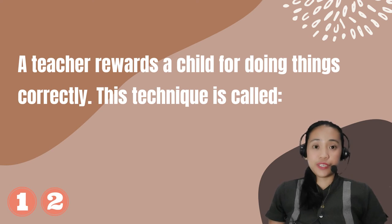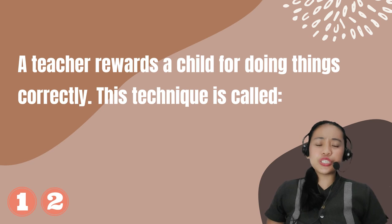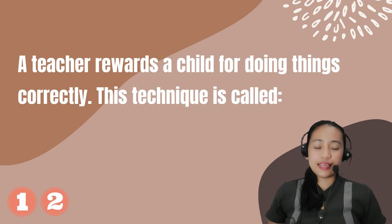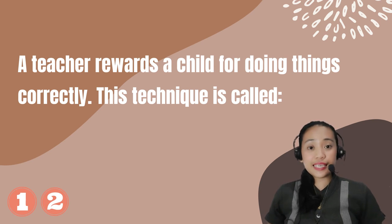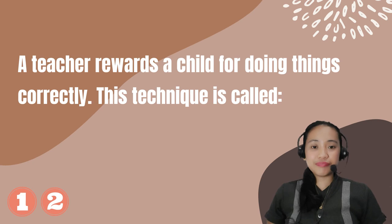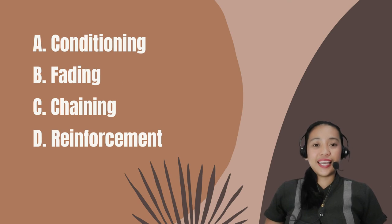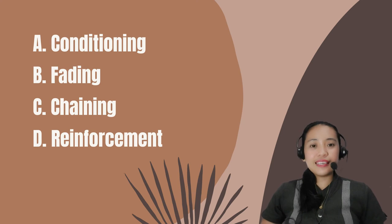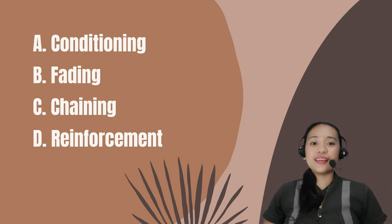Number 12. A teacher rewards a child for doing things correctly. This technique is called: A. Conditioning. B. Fading. C. Chaining. D. Reinforcement.